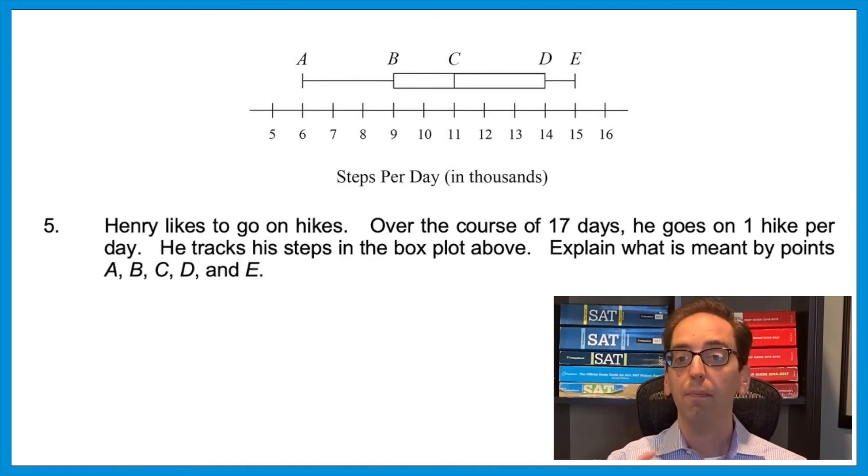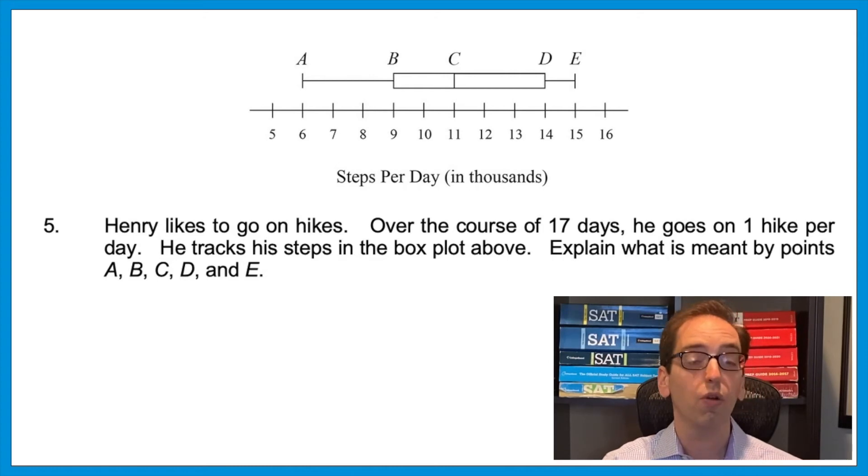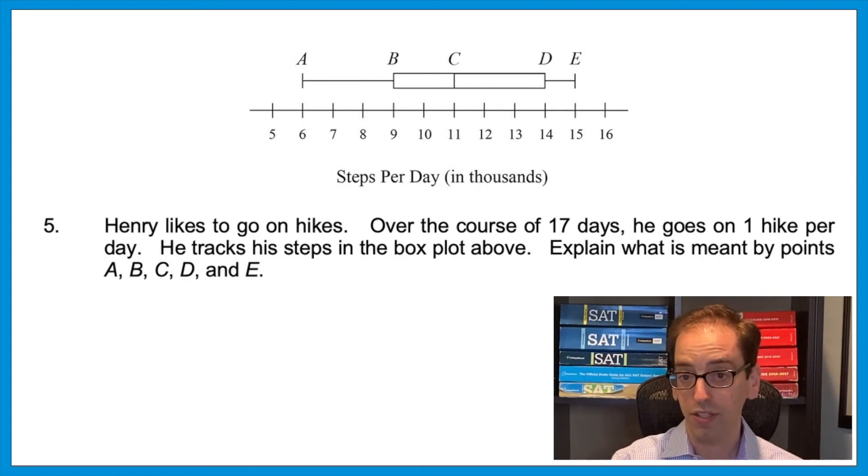And now within that, B is the median of that first half, and D is the median of that second half. That means we split each part of that graph into quartiles. In other words, A to B is 25% of your data, B to C is 25% of your data, and so on, C, D, and D, E. Now usually, all these questions want you to know is that the spot in the middle represents the median. But sometimes they'll ask about the other parts of a box and whisker plot as well. And here's another type of graph that you might see pop up on the SAT.